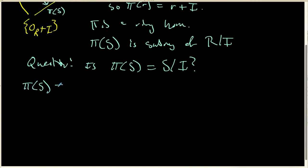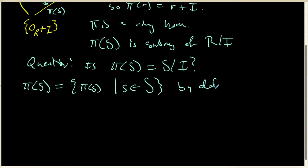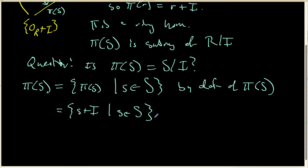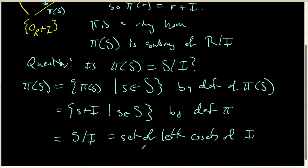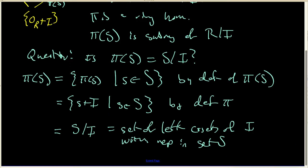Pi of S is nothing more than the set of pi of s, where s belongs to the subring S — that's just the definition of the image of S. But we know what pi does to any s: that's just s plus I. So we get the set of s plus I, the set of left cosets of I where the coset representative is pulled from the subring S. By the definition of our map pi, this is nothing more than S mod I — literally the set of left cosets of the ideal I with representatives inside S.